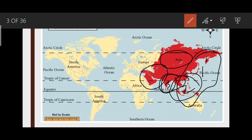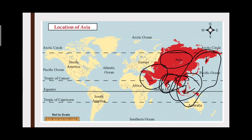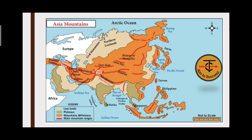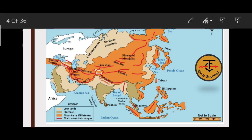Now let us see the physiographic divisions of Asia, which are very important to understand. First of all, the Pamir Knot — where multiple mountain ranges converge. This is called the Pamir Knot, also known as the Roof of the World.